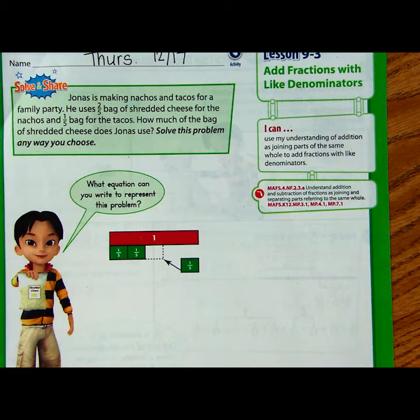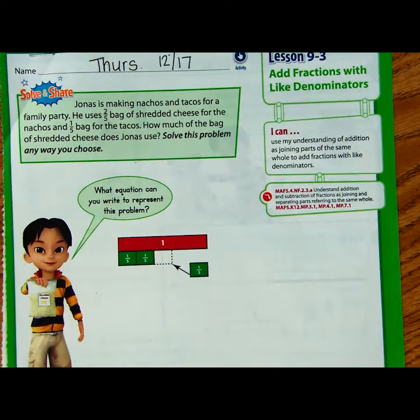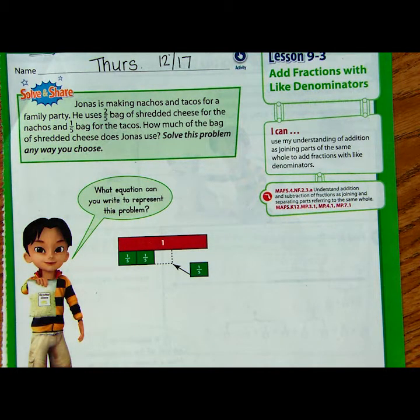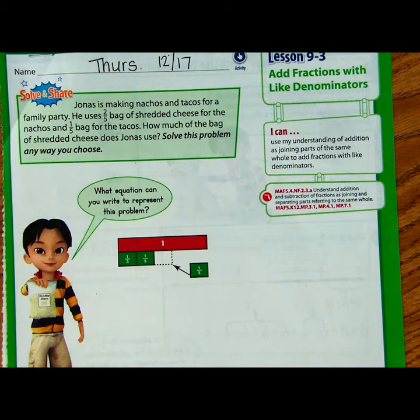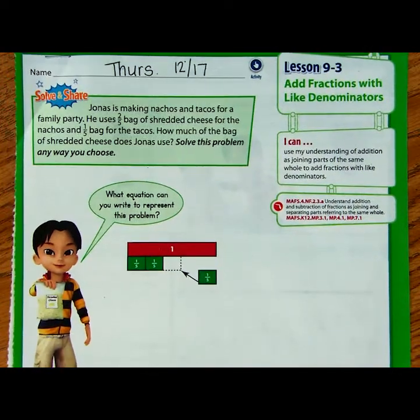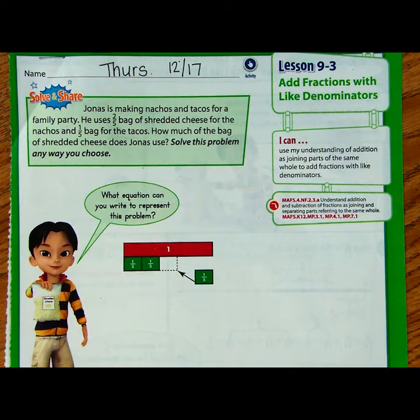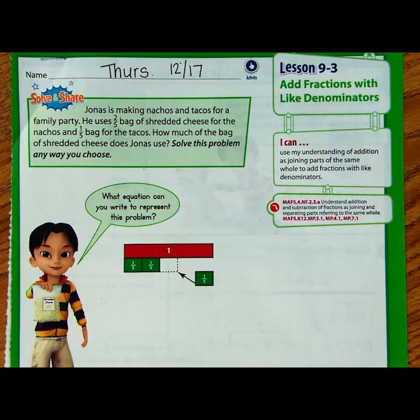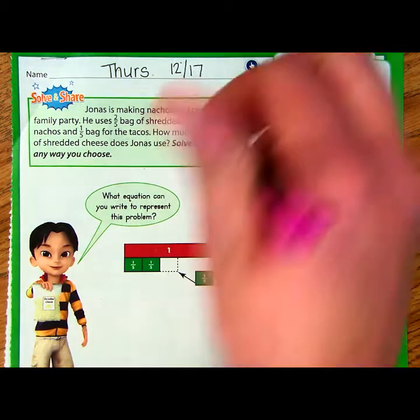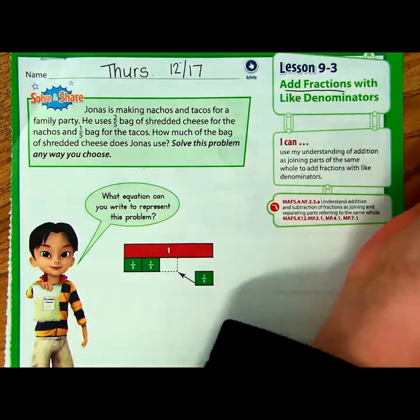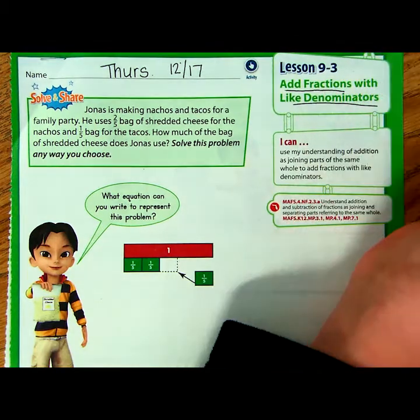All right, boys and girls, so we are back. Today is Thursday, and I am going through page 341 in your math book. If you would like to follow along, you can pause this video. I think that many of you will find today's lesson fairly easy. It's going to look very similar to what we did on Tuesday. So this is just another day of practice with adding fractions with like denominators, meaning the denominators are the same.